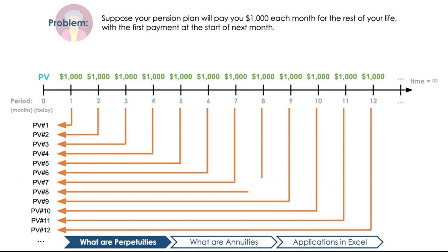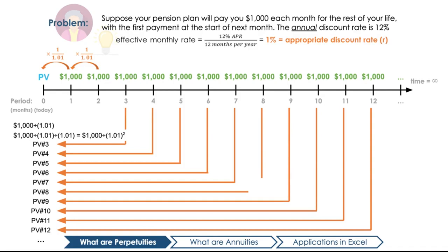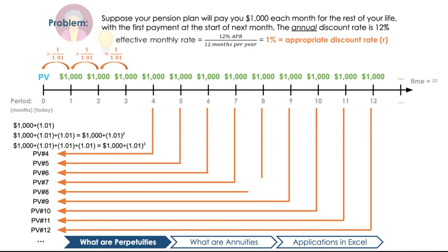Let's say our annual discount rate is 12%. Since discount rates are quoted annually, or in APR, then we know that our effective rate — the monthly rate that matches with our monthly pension payments — must be 12% divided by 12 months per year, which is 1%. Our first payment will have a present value of $1,000 times 1 over (1 + 0.01). Our second payment will have a present value of $1,000 times 1 over (1 + 0.01) squared, since we must discount this cash flow for two months. Our third payment will have a present value of $1,000 times 1 over (1 + 0.01) cubed, as we discount it back for three months.